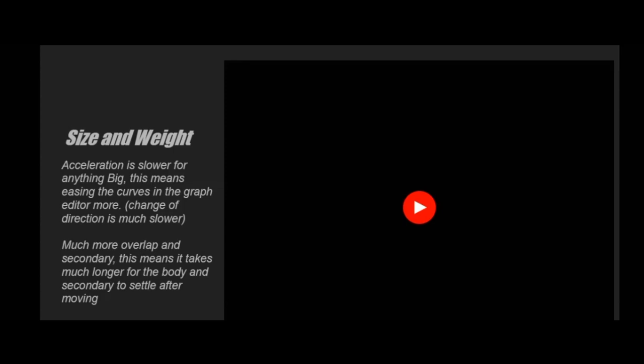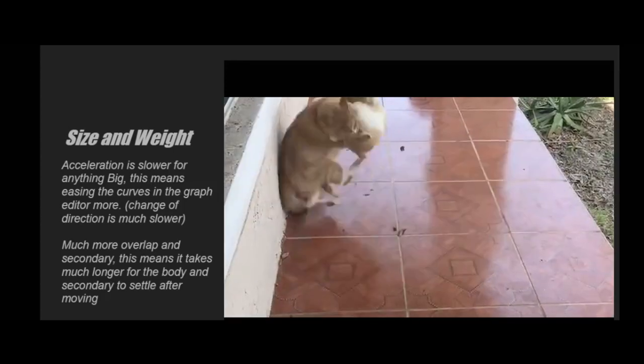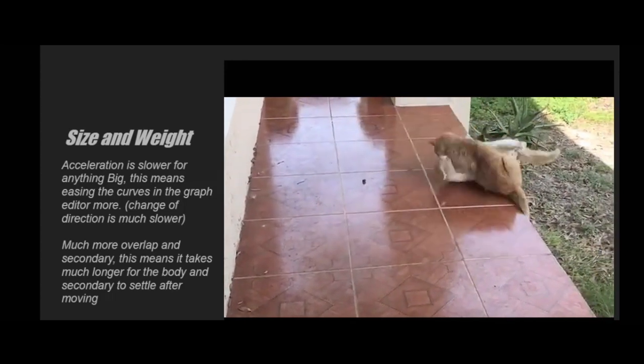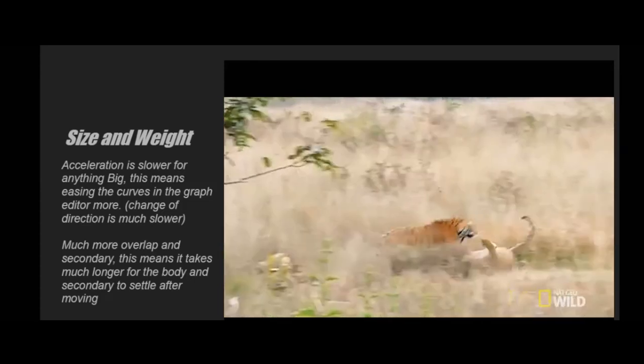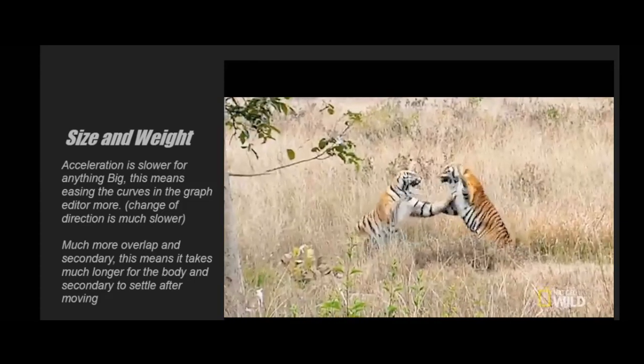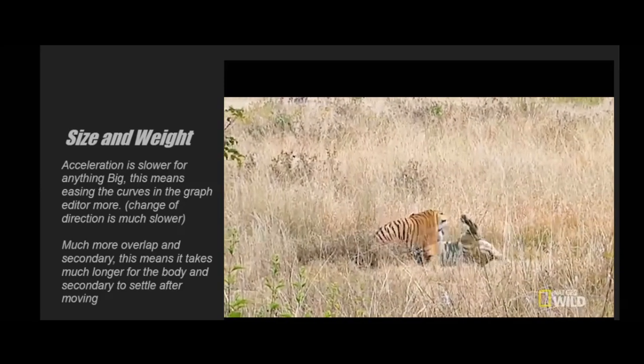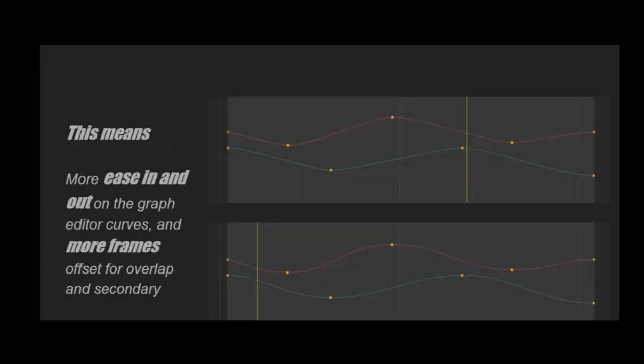Size and weight matter a lot. The tiger I was animating is much heavier than a house cat, so I really wanted to make it look heavy. Anything heavy accelerates and decelerates much slower, so the curves and graphs will be a lot more eased out at the tips, with more overlap and secondary motion. You can see in a clip of cats fighting that they stop moving quickly with not much secondary overlap, whereas tigers fighting wobble a lot with each kick due to fat and muscle. It's too easy to make something look light in CG.